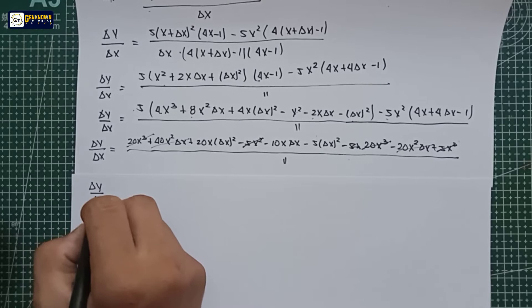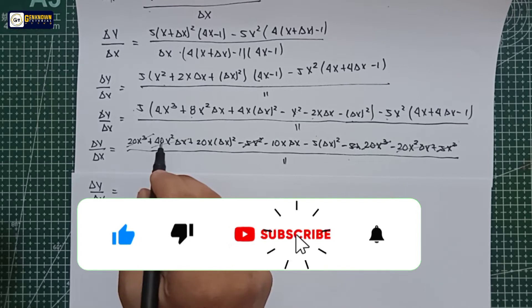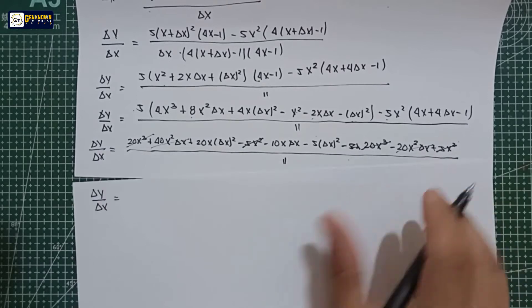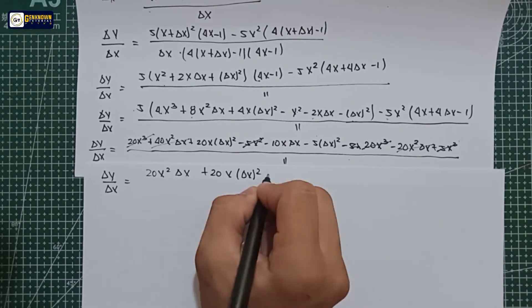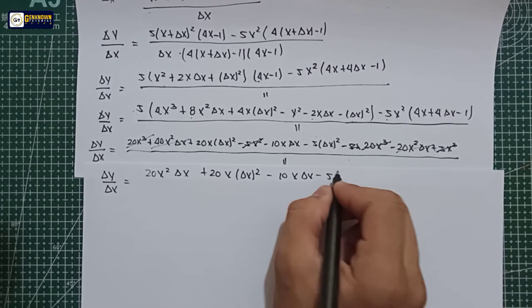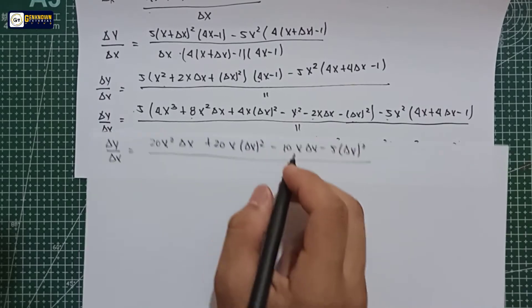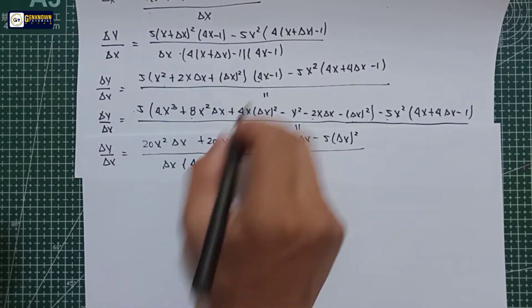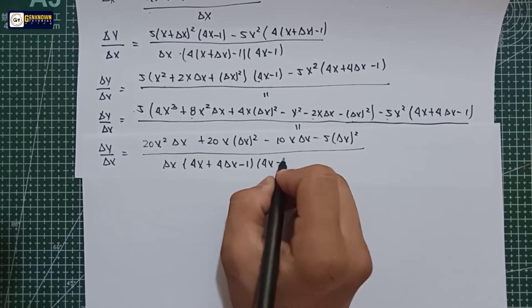After cancellation, delta y over delta x is equal to: 40x squared·delta x minus 20x squared·delta x equals 20x squared·delta x, plus 20x·delta x squared, minus 10x·delta x, minus 5·delta x squared, all over the denominator: delta x multiplied by (4x plus 4·delta x minus 1) multiplied by (4x minus 1).